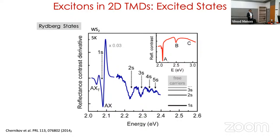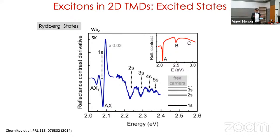As you go to the higher states they become broader, because they have very low oscillator strength and they don't live long — very short lifetime — and they're much more susceptible to disorder compared to the 1s state, which is more localized. We use the idea that the higher states are more delocalized than the 1s to introduce interactions between them through the cavity.